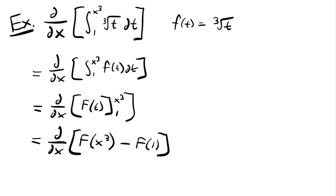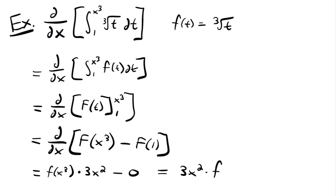Evaluating for x cubed and 1, this would be equal to the derivative of the antiderivative at x cubed minus the antiderivative at 1. Taking the derivative of each term: the first term requires the chain rule, with the outside function being the antiderivative and inside function being x cubed. This gives us small f of x cubed — the inside part does not change — multiplied by the derivative of the inside function, which is 3x squared. The derivative of the antiderivative at 1 is just 0 since it's a constant.